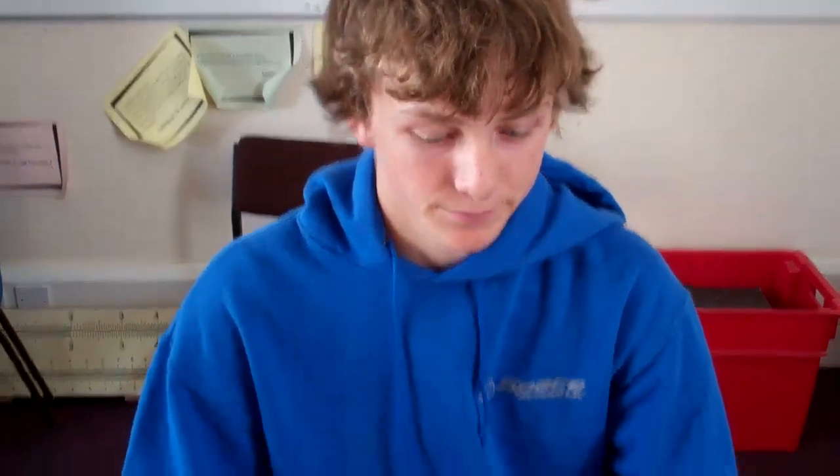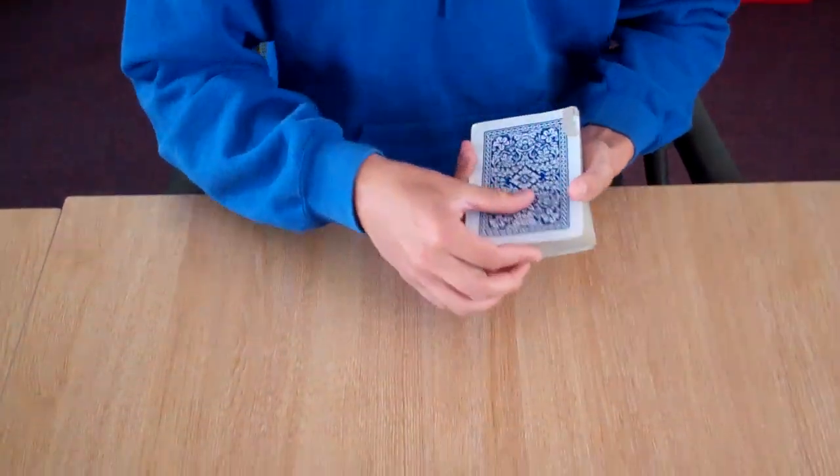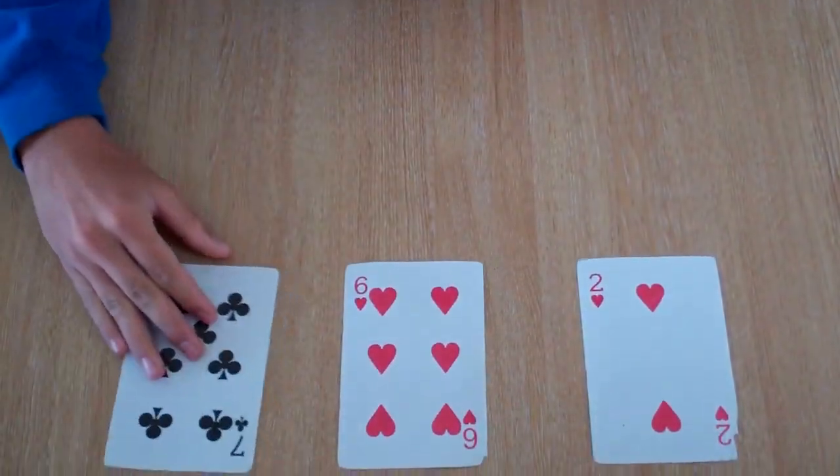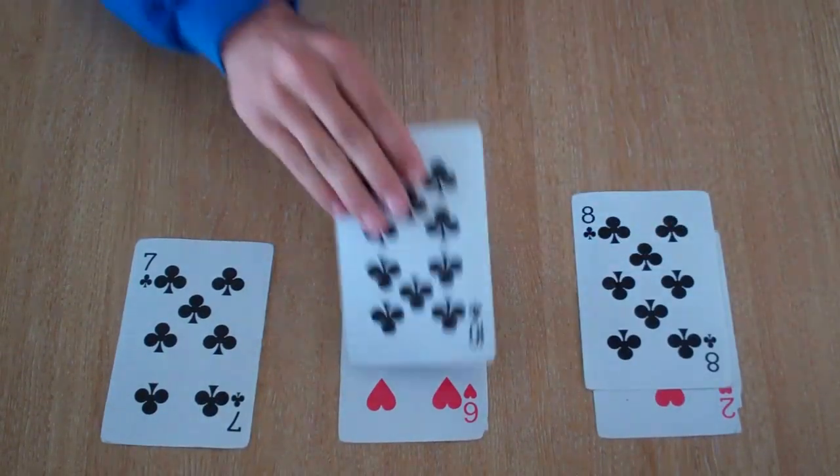Now, I'll explain to you the maths behind this trick. When you deal out the cards, it's exactly like that. Three columns, seven cards.